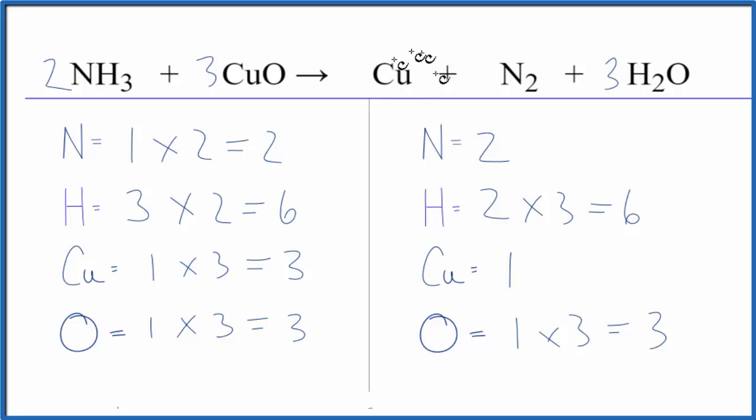But that's fine, because copper is by itself. That's easy to fix. Put a 3 here. 1 times 3. That'll give us 3. And we're done. This equation is balanced.